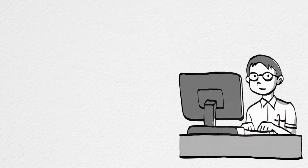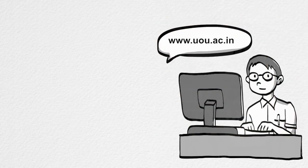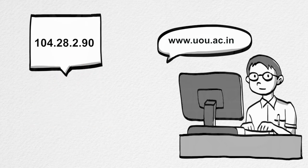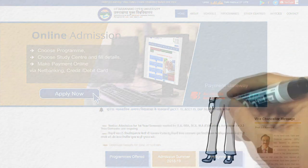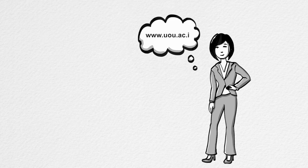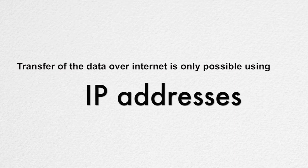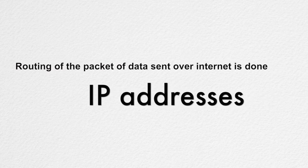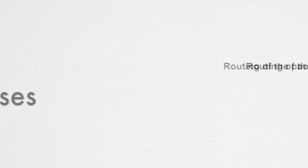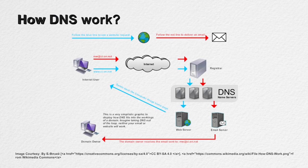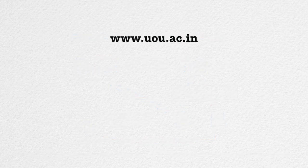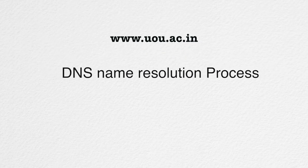Whenever we browse any website on the internet, we type a name like www.uou.ac.in. We rarely deal with IP addresses like 104.28.2.90, but the fact is that even if we type the IP address in the URL, it will land us on the same web page. We are very comfortable using and remembering names instead of numbers. Moreover, these IP addresses change over time and some sites have multiple IP addresses. The transfer of data over the internet is only possible using IP addresses, as the routing of data packets is done using IP address. There is a server called the Domain Name System or DNS which takes care of this translation to save us from remembering changing IP address numbers. Whenever you type an address like www.uou.ac.in, a process called DNS name resolution takes place in the background.